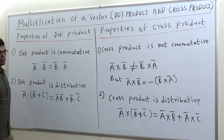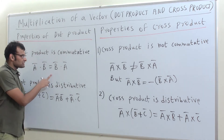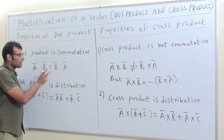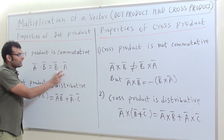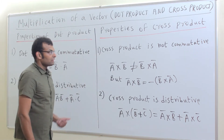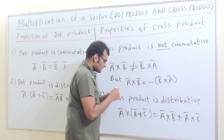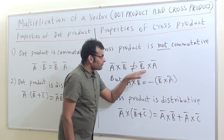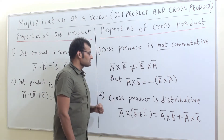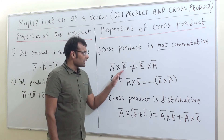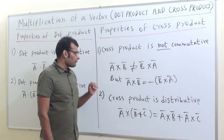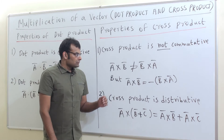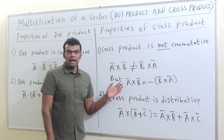The first property: dot product is commutative. That is, A bar dot B bar equals B bar dot A bar. Coming to cross product, it is not commutative. A bar cross B bar is not equal to B bar cross A bar. But A bar cross B bar equals minus of B bar cross A bar. So cross product exhibits anti-commutative property.